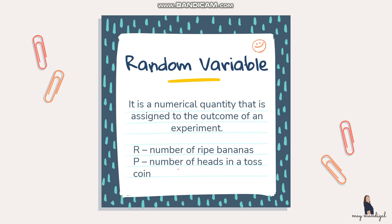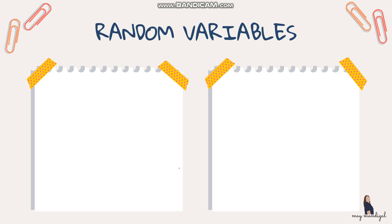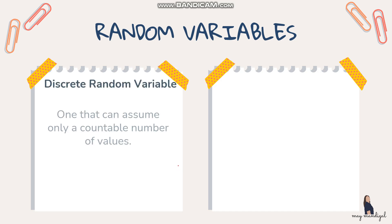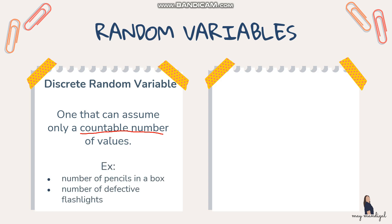There are two types of random variables. The first is the discrete random variable, which can assume only a countable number of values. That means we use counting numbers to assign values to our random variable. Examples include the number of pencils in a box and the number of defective flashlights.